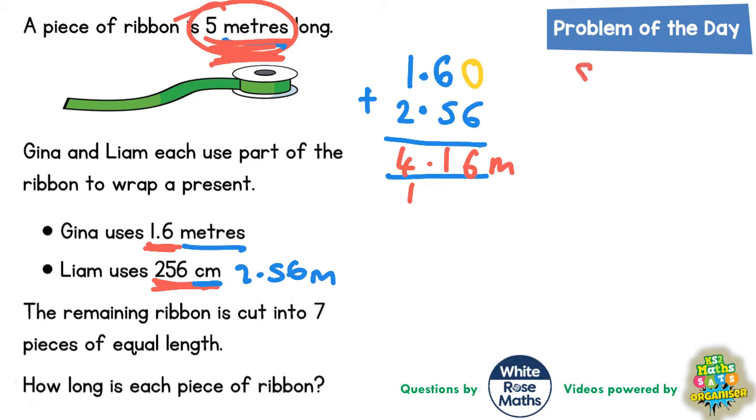The remaining ribbon is basically going to be the difference between the 5 metres at the start and the 4.16 metres. So 5 metres is 5.00 metres and 4.16 we need to cut off to see what's left. We've got 0 take away 6, we can't do, so we need to borrow from the 5.